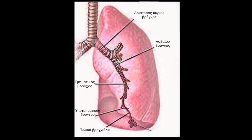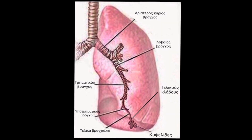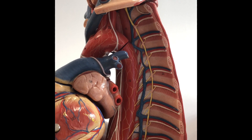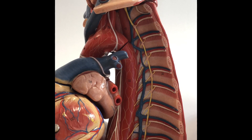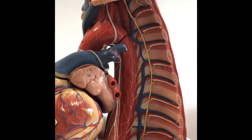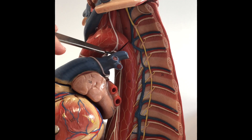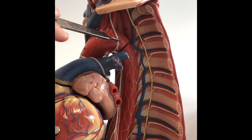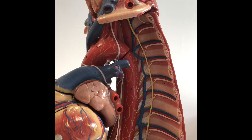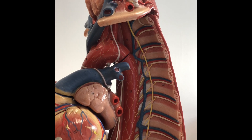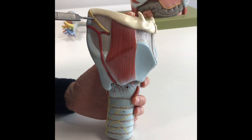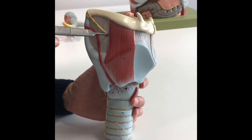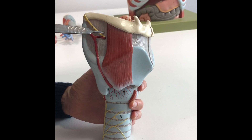Each bronchopulmonary segment receives its own neural supply, which is part of the autonomic nerve supply to the bronchi. The recurrent laryngeal nerve is derived from the vagus nerve inside the thorax. The left recurrent laryngeal nerve, after looping around the aortic arch, runs in the groove between the trachea and esophagus toward the larynx. Here we see the inner or mucosal layer of the neural supply, deepening through the thoracic structures surrounding the inner trachea.